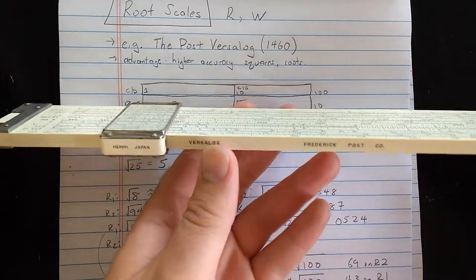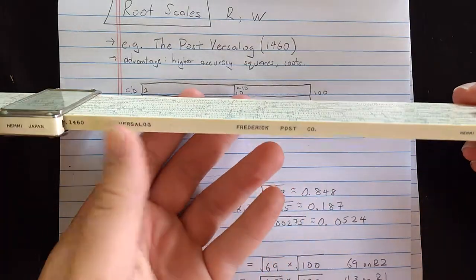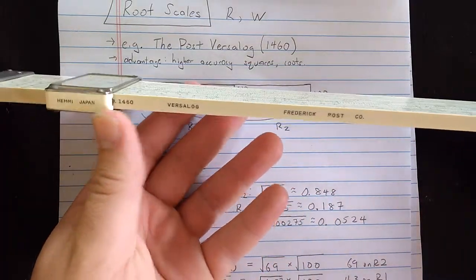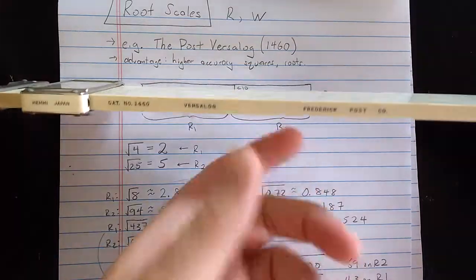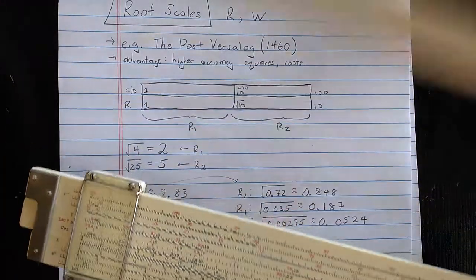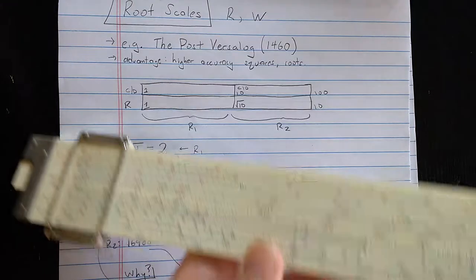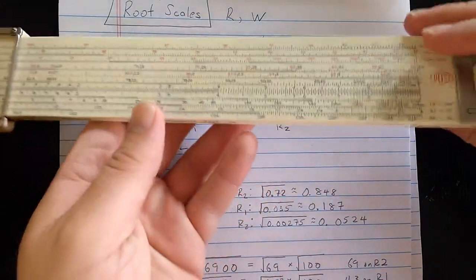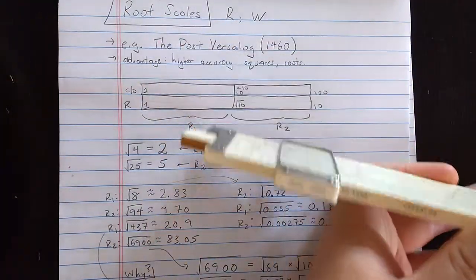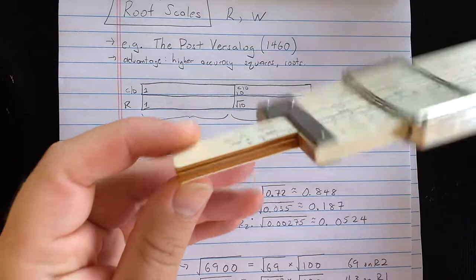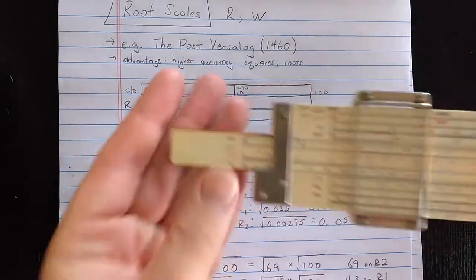This is the Frederick Post Company VersaLog slide roll made by Hemi in Japan. This is also made by Hemi. Okay, bamboo. Adjustable cursor, adjustable braces.